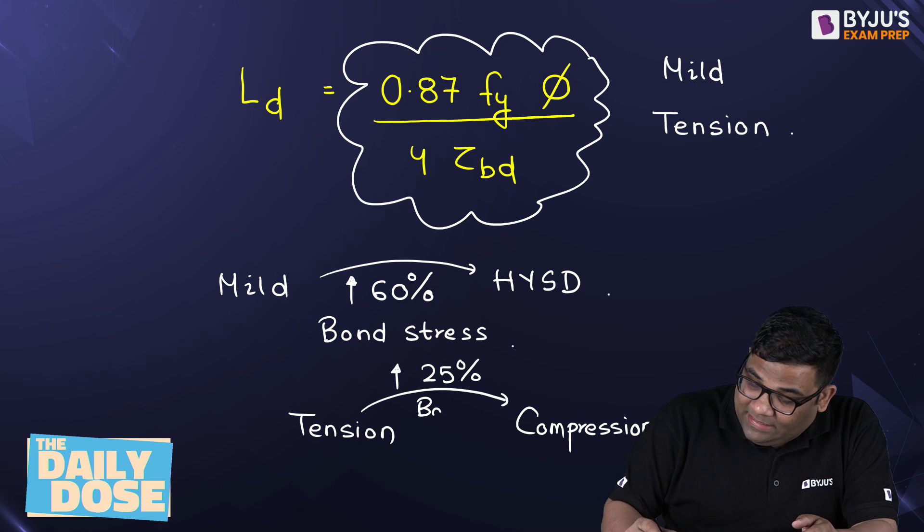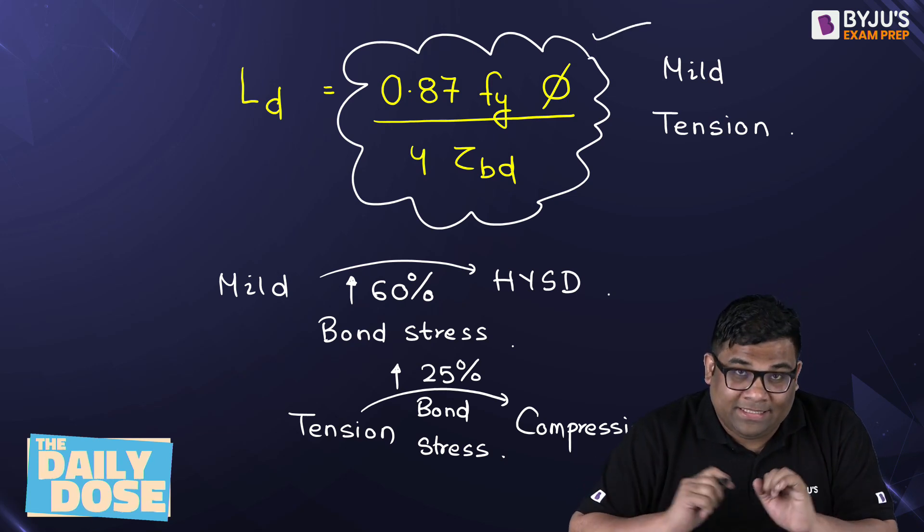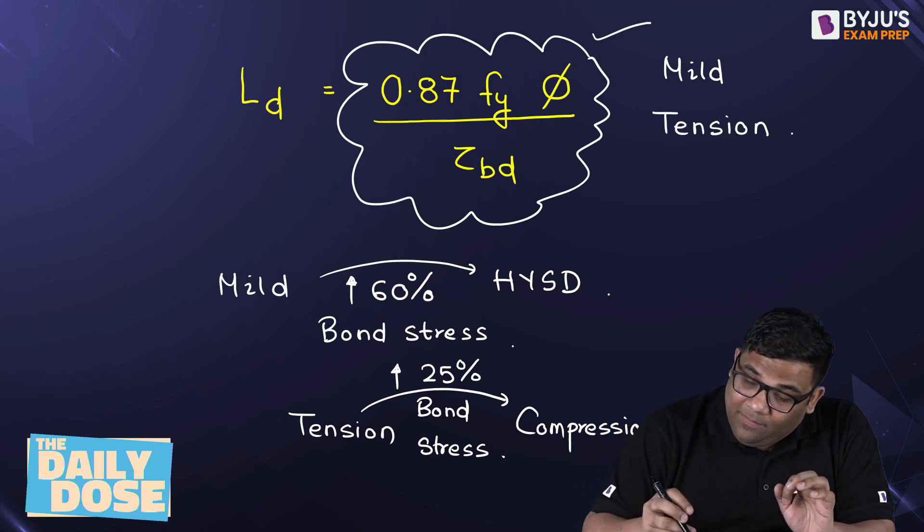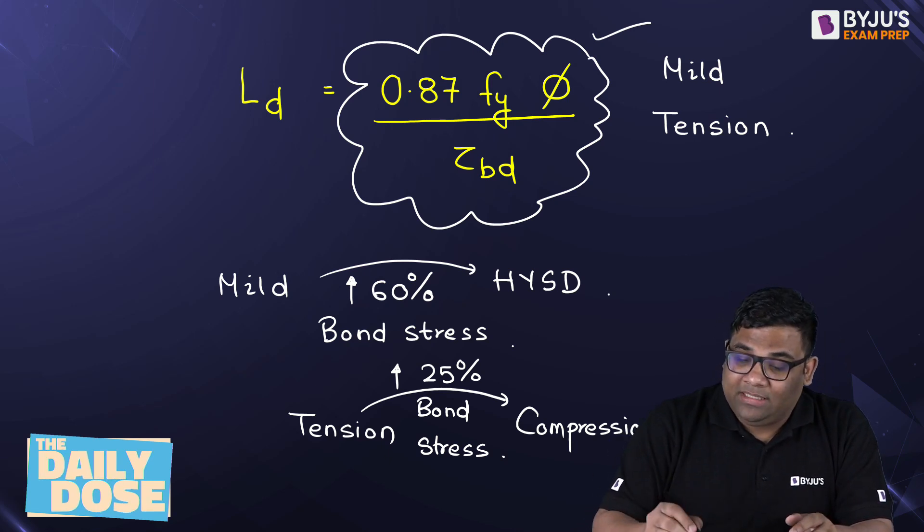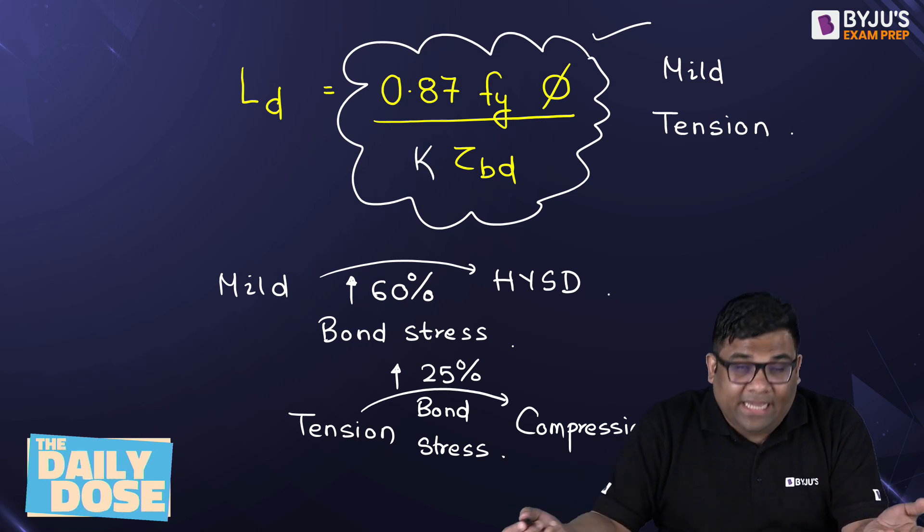So I can say that since the bond stress is increasing in these two cases, I cannot apply this equation for all the cases. So what I will do? I will make this 4 as K. I will write down this as K and I will change the K as per different conditions. How? Let us see.